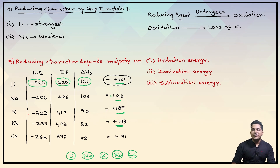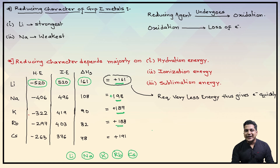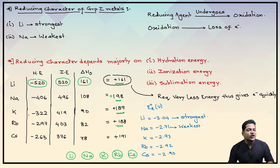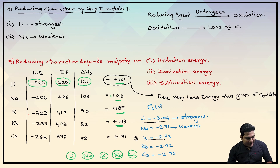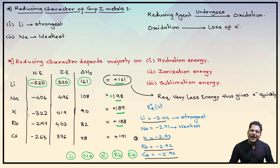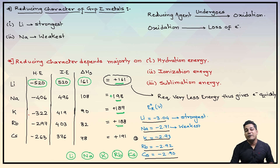Now if you notice from the standard reduction potential values, the highest reduction potential is coming for lithium. After lithium, number two is potassium which is minus 2.93. After that comes rubidium which is minus 2.92. And finally you get cesium with minus 2.90. Ultimately the weakest of all comes at minus 2.71 for sodium.